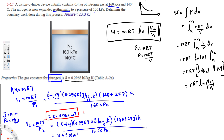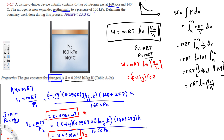Now we have V1 = 0.3064 m³ and V2 = 0.4903 m³. We plug these into the work equation: W = mRT·ln(V2/V1). So W = 0.4 kg × 0.2968 kJ/(kg·K) × 413 K × ln(0.4903/0.3064).